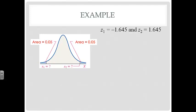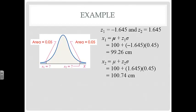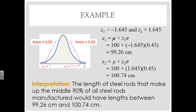Using the table to find the Z-scores for those cutoffs, we plug in the mean, Z-score, and standard deviation. The lower limit is 99.26 cm and the upper limit is 100.74 cm. Therefore, the middle 90% of steel rods have lengths between 99.26 and 100.74 centimeters, and the manufacturer would accept any rods within those lengths.